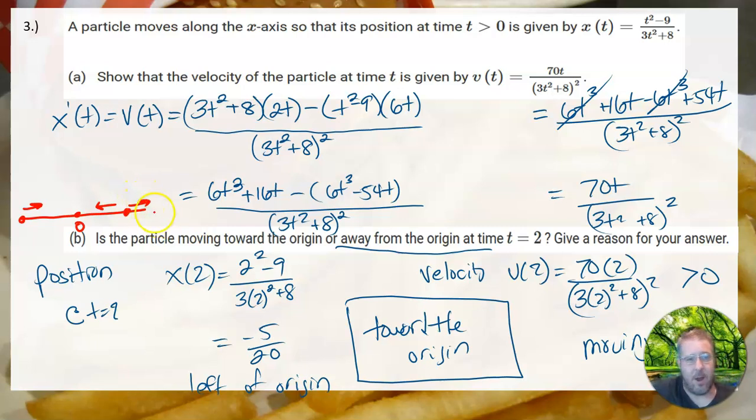So two things we need to know. First, I'm going to find my position by plugging two into the original equation. Remember, this is position and this is velocity. So if you want to find where you started, put it in the position formula. When you plug it in, you get negative 5/20, which is negative 1/4. So you're starting at negative 1/4.